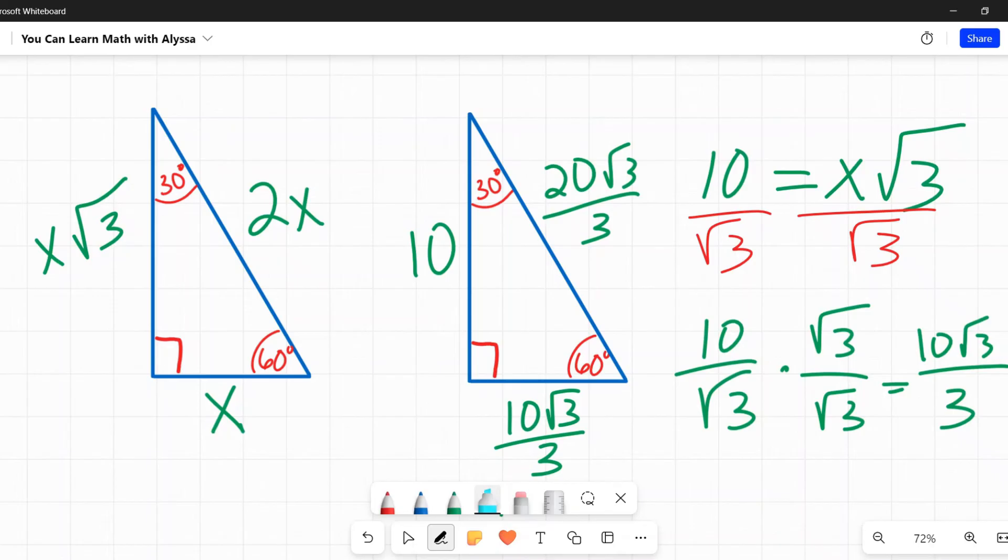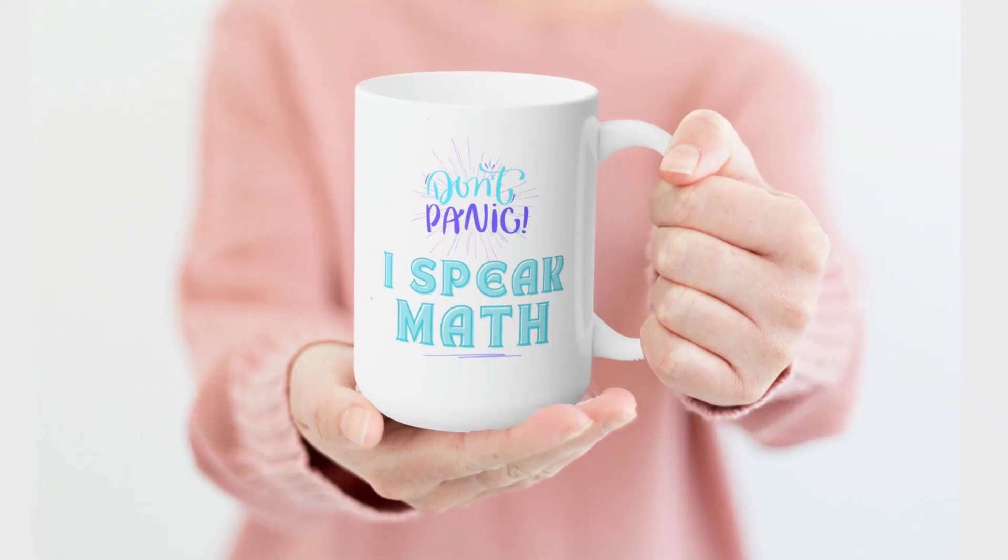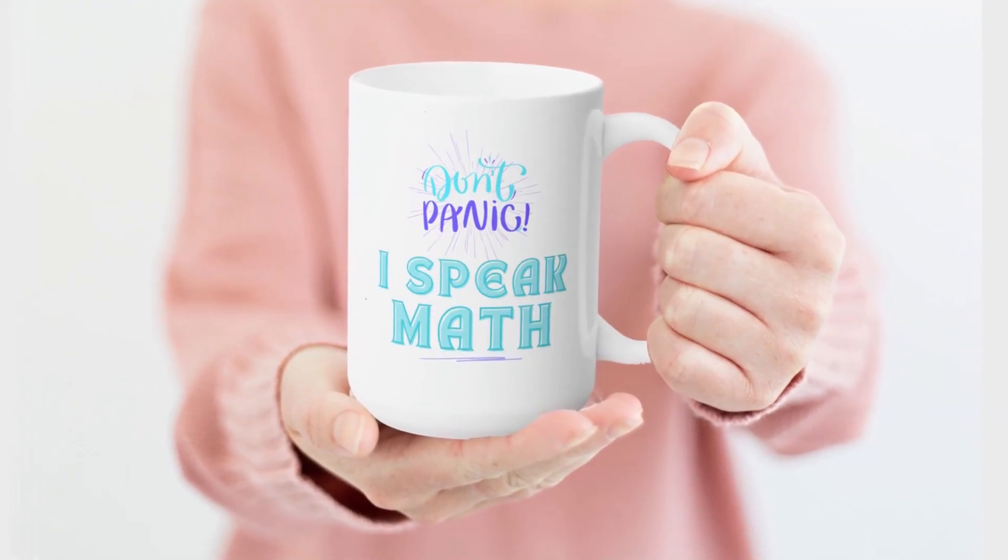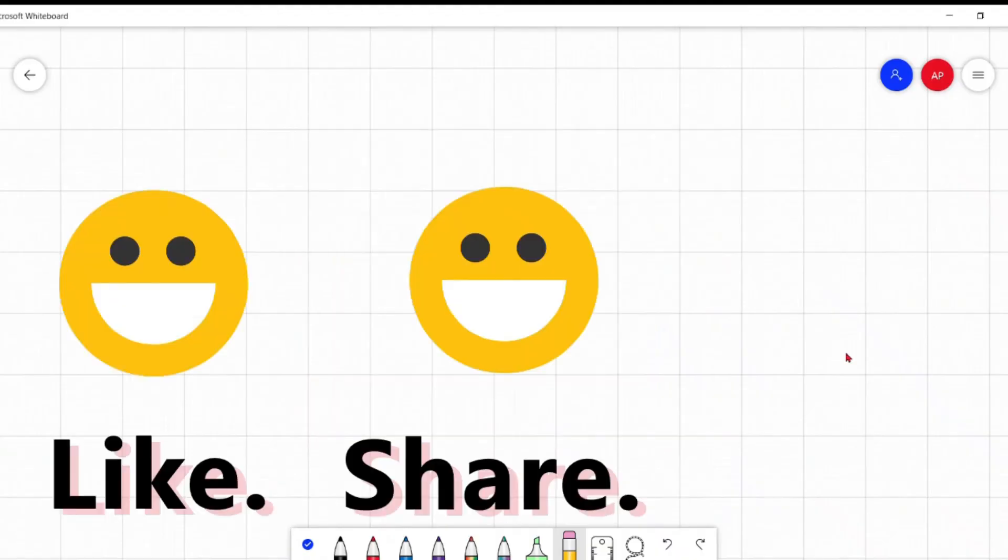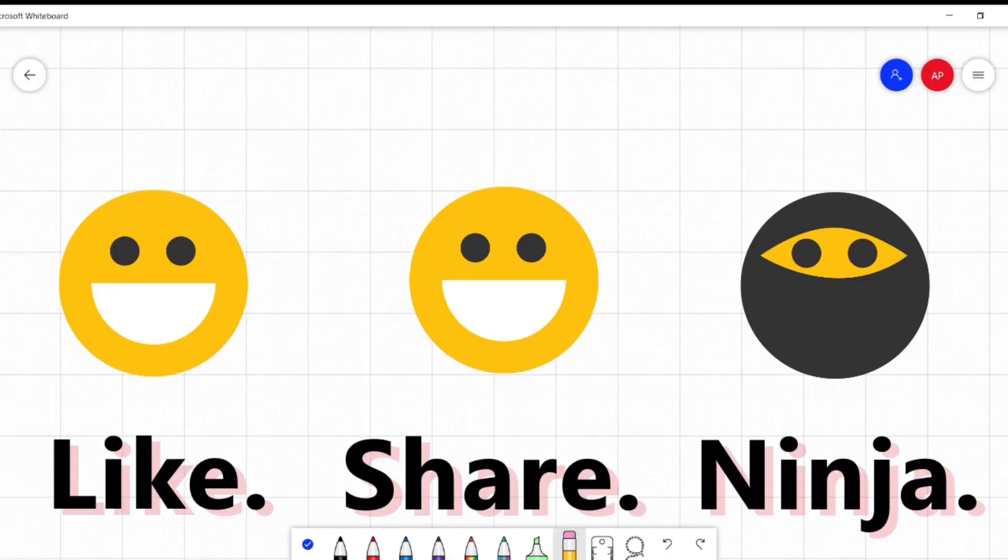If you would like a more in-depth explanation about simplifying square roots and 30-60-90 triangles, please click on the long form videos linked in the description below. Be sure to check out my new math related and math adjacent merch on Spreadshop and Etsy. If this is helpful or useful in any way, please like, share, subscribe. Thank you so much for stopping by. I hope you have a great day. See you later, bye!